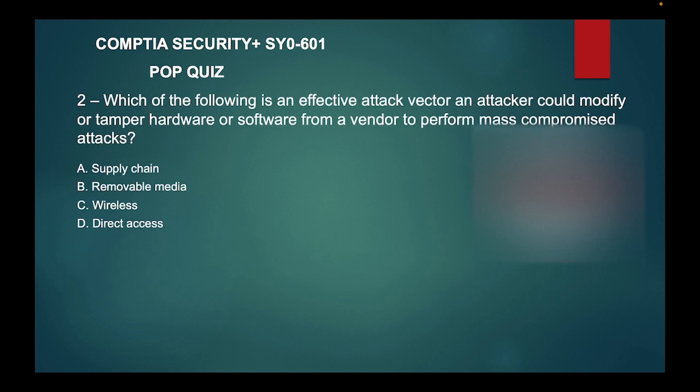Number two: which of the following is an effective attack vector where an attacker could modify or tamper with hardware or software from a vendor to perform mass compromise attacks? A) Supply chain, B) Removable media, C) Wireless, or D) Direct access?